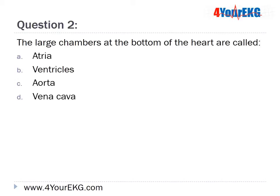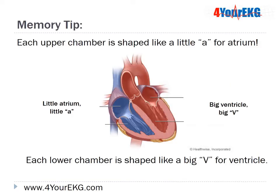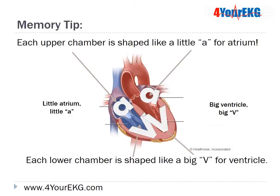Question 2: The large chambers at the bottom of the heart are called — A. Atria, B. Ventricles, C. Aorta, or D. Vena cava. The answer is B — Ventricles. Each upper chamber is shaped like a little 'a' for atrium, and each lower chamber is shaped like a big 'V' for ventricle.